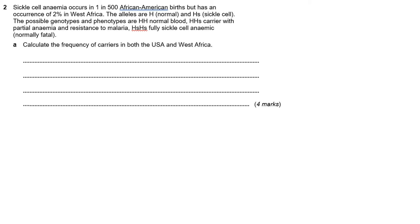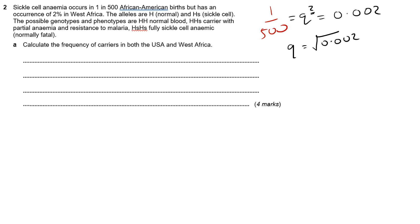If we just focus on the USA to start with, in the USA we have 1 over 500. So 1 over 500 equals Q squared, which equals 0.002. And the important thing, folks — watch that square. To get Q, we have to get the square root of 0.002. That's where most people go wrong; they forget about the square root. When we do that, we round off to three significant figures and get a value of 0.0447.